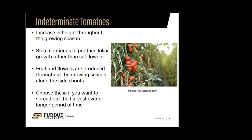If you're wondering how to tell whether a tomato is determinate or indeterminate, it should be on the plant label, so you'll be able to see that information there.